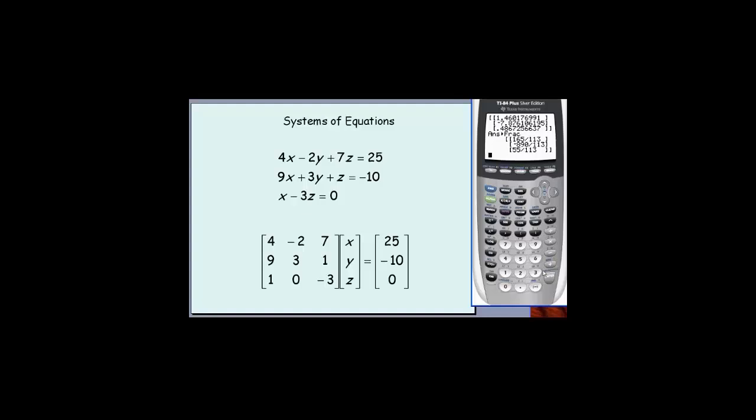And, oh, turns out x we could also write as 165/113ths. Y could be negative 890/113ths, z could be 55/113ths.